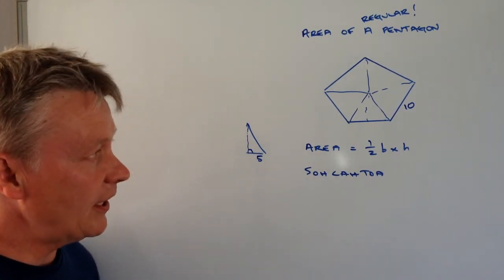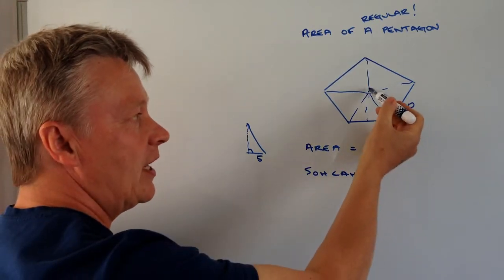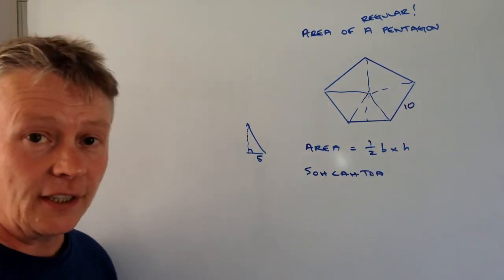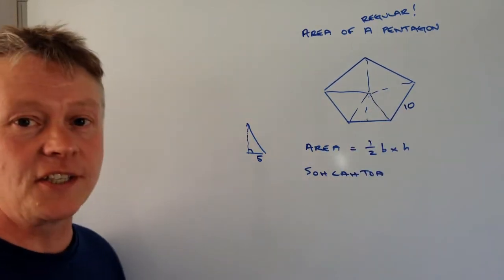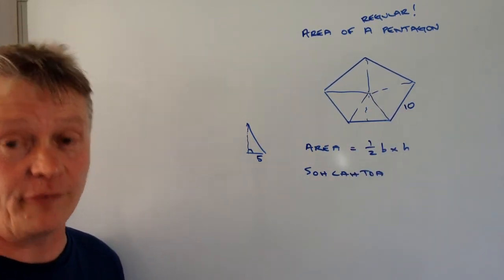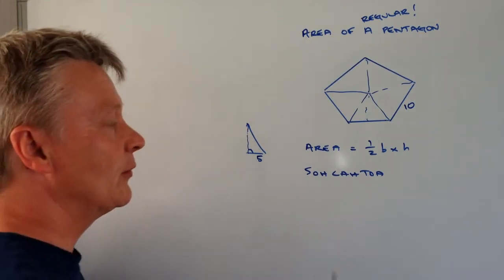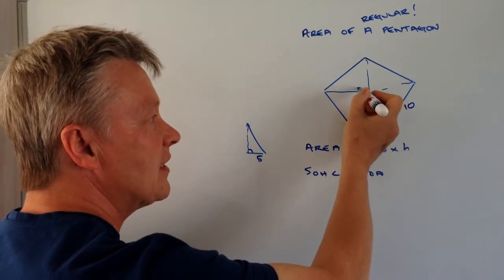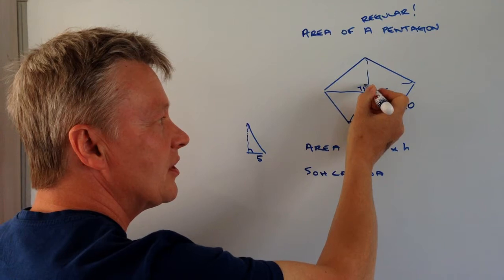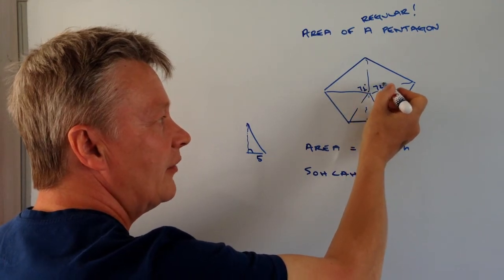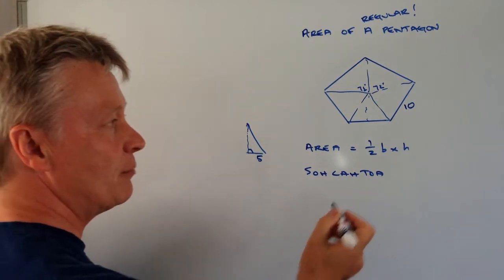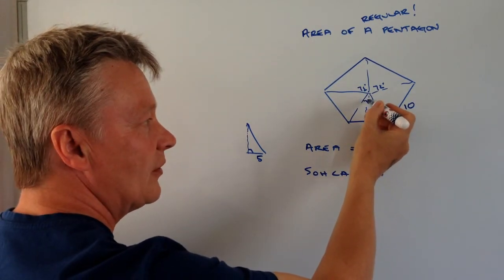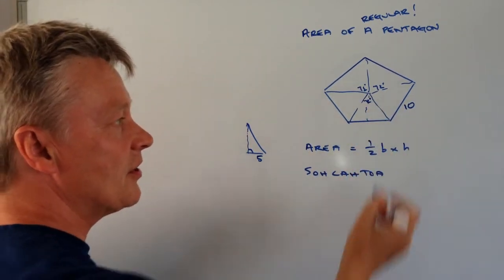Because I can also find out the angle at the top here. The angle at the top is going to be 360 degrees divided by 5 because there's 5 triangles. So in other words, each one of these angles at the top is 72 degrees. And if you pop that into a calculator you'll be able to just divide 360 by 5 and each one is 72 degrees.